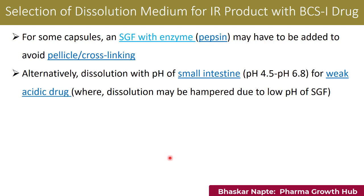Alternatively, dissolution media with the pH of the small intestine — from pH 4.5 to 6.8 — can be considered, especially for weakly acidic drugs. If your drug substance is weakly acidic in nature, its dissolution may be hampered in the simulated gastric fluid or in 0.1N HCl, because that is a highly acidic condition. The acidic conditions may limit the dissolution of a weakly acidic drug substance, and for that reason you can consider the pH range from the small intestinal region, between pH 4.5 and 6.8.